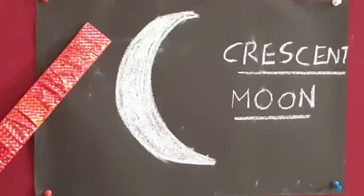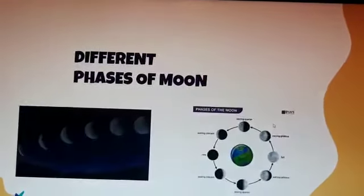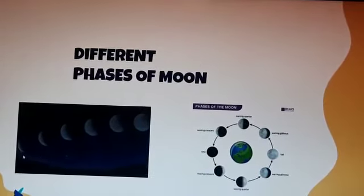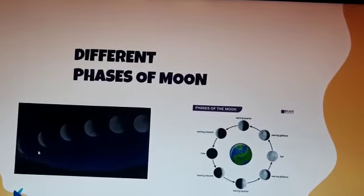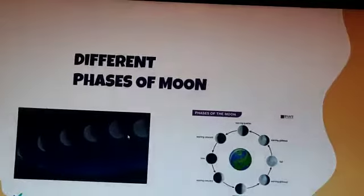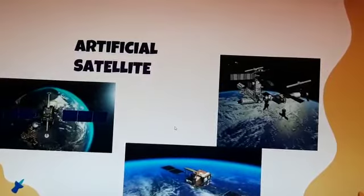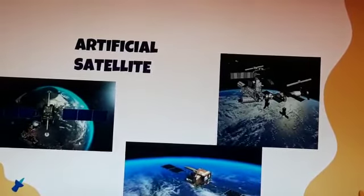Now we will see what artificial satellites are. You can see the picture of the natural satellite and the artificial satellite. This is the natural satellite, the moon, and this is the artificial satellite. Many artificial satellites have been sent into space by scientists, and these artificial satellites are very helpful to us.